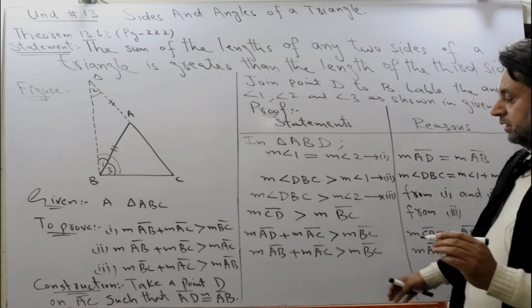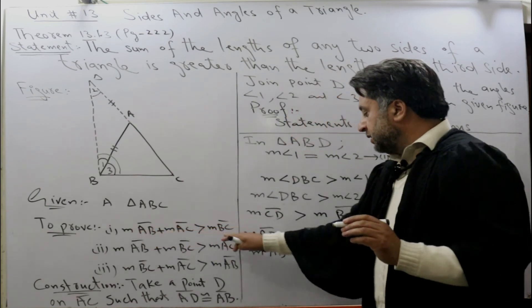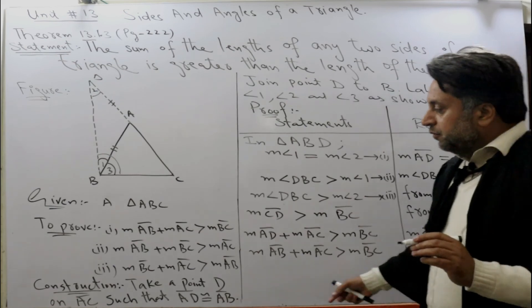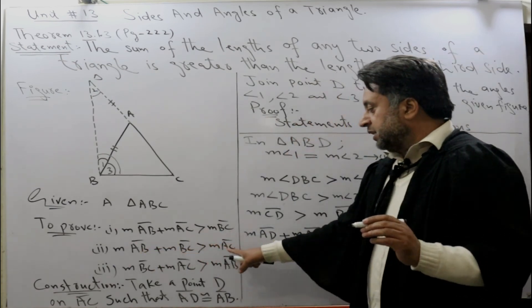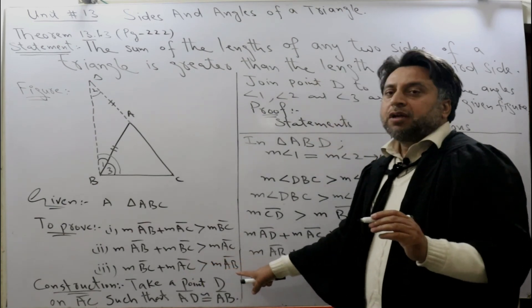This is our proof of the first part: AB plus AC is greater than BC. Similarly, we can prove that AB plus BC is greater than AC, and BC plus AC is greater than AB.